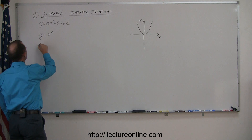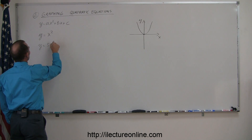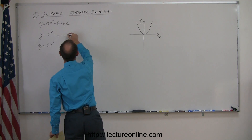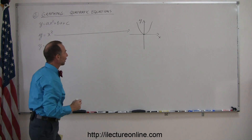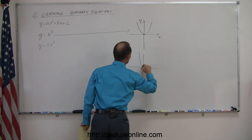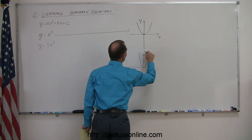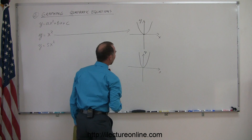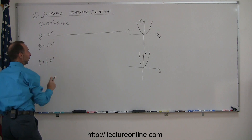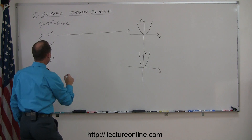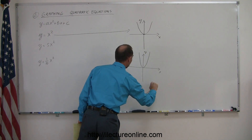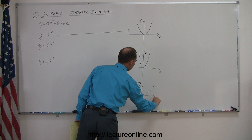What if you have y equals 5x squared? That would actually narrow the parabola. So if this is the parabola for y equals x squared, then y equals 5x squared would be a skinnier parabola. If you have y equals one tenth x squared, that would widen the parabola, giving you kind of a general feel for how to graph these parabolas.